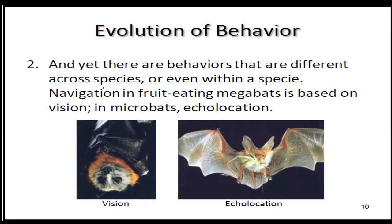Yet some species differ from our behavior because they evolved differently. For example, bats use echolocation for their navigation instead of actually using their eyes.